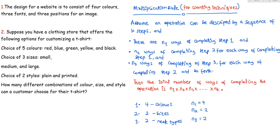The total number of ways of producing the shirt will be four times two times two, which equals 16. So there are 16 different ways of producing a shirt.